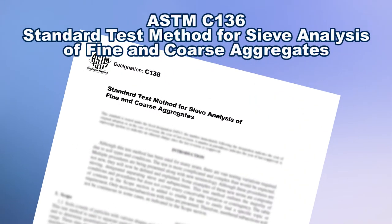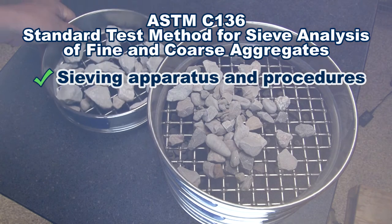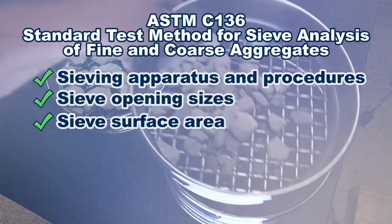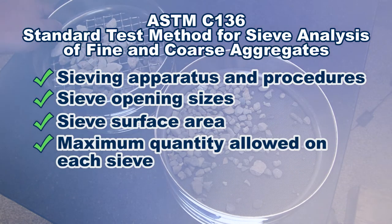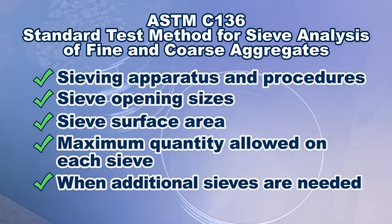ASTM C136, standard test method for sieve analysis of fine and coarse aggregates, informs the operator on how to select ASTM E11 test sieves with suitable openings to furnish the information required for concrete and asphalt mix designs. Besides covering sieve apparatus, sampling procedures, and other considerations, the standard gives guidance on sieve openings, sieve surface area, maximum allowable quantity of material retained on a sieve, and selection of additional test sieves to prevent overloading or to provide further information such as fineness modulus.